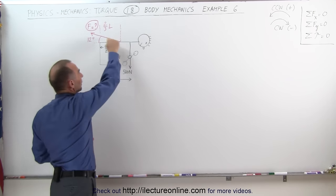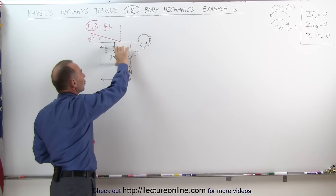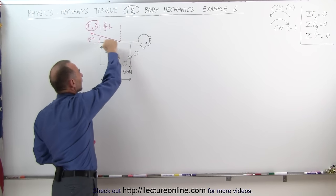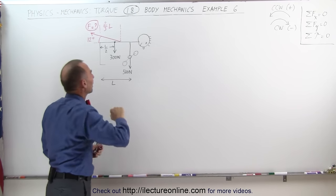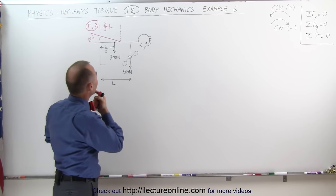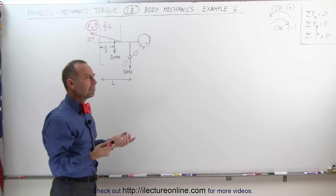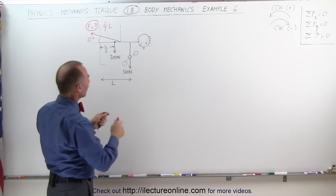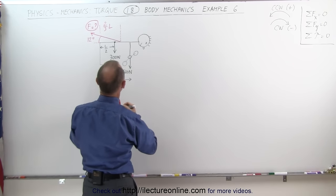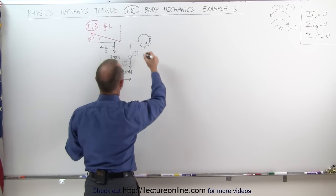Now assuming that the weight of the body is about 300 newtons for the upper part of the body acting at the distance of L over 2 right here. I did not account for the weight of the head. Now let's say how big is the head? Maybe another five pounds right here. That would be another 20, another 200 newtons.